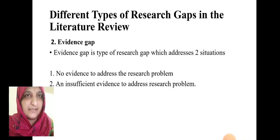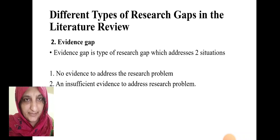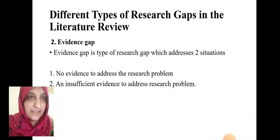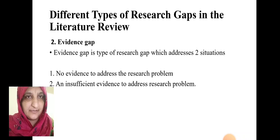Next is evidence gap. Evidence gap is the type of research gap which addresses two situations: number one, no evidence to address the research problem, and number two, insufficient evidence to address the specific research problem. In that case, we report it as an evidence gap.